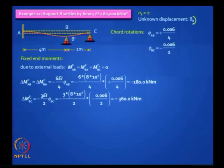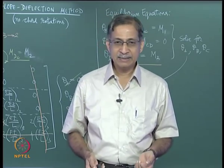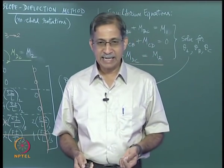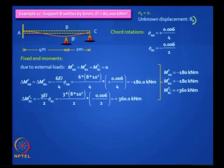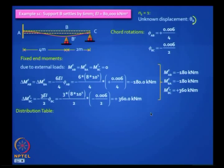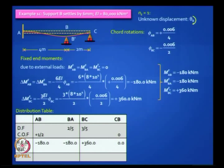This is a known sway problem — the chord rotations are known. Once you have these moments, you can distribute them and add them up. MF_AB is minus 180, MF_BA is also minus 180 — all coming from chord rotations. MF-naught-BC is plus 360, because it is minus of minus: it is minus 3EI/L times phi, but phi itself is negative because it is anticlockwise. We had already calculated the distribution factors in the last class.